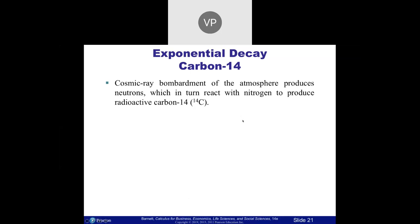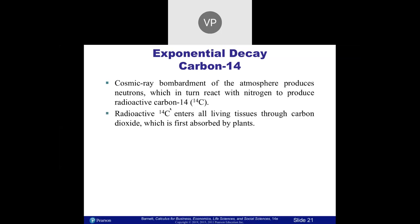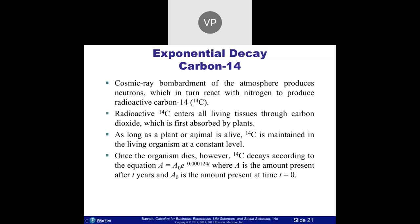Now we have exponential decay — exactly the same concept but going backwards. Radioactive carbon loses mass over time. It gets smaller and smaller, never quite disappearing. Here's the formula: A = A₀ · e^(-0.000124t). Notice it's a similar formula — A sub zero is what you begin with, T is time, and A is how much you end with. The exponent has a negative number in front of it — that's what happens with decay. When time is zero, e to the zero is one, so A sub zero is your initial amount.